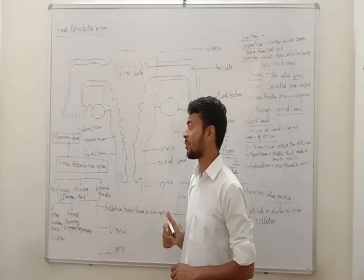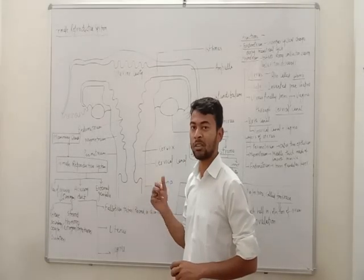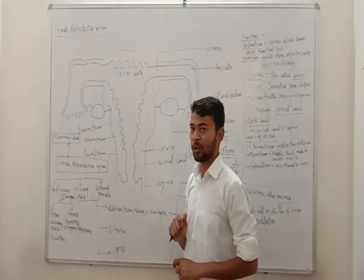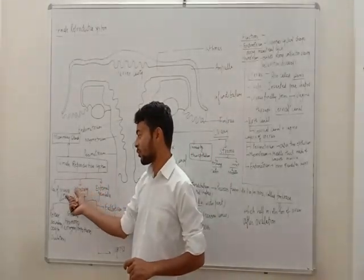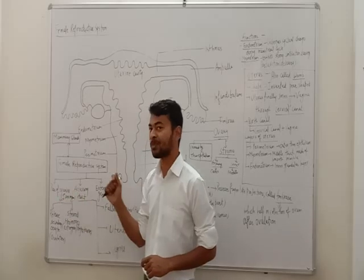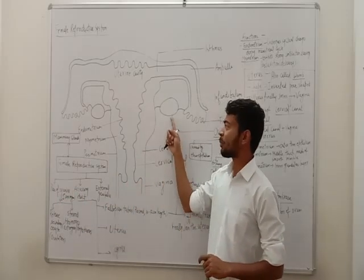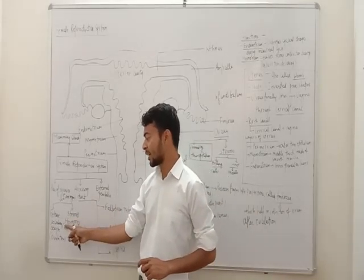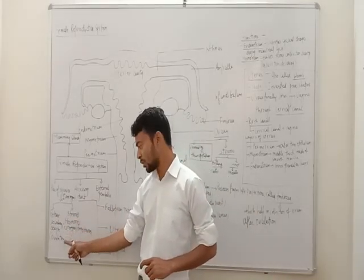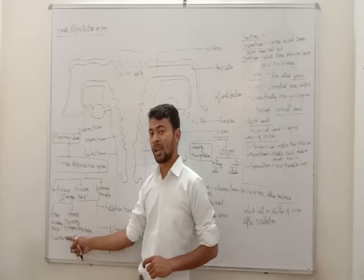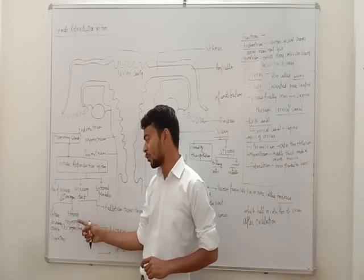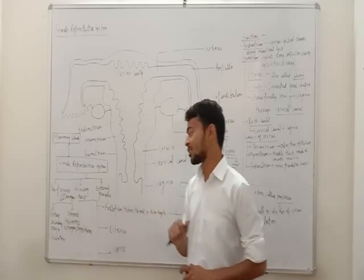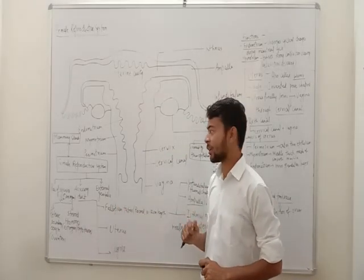Now we are discussing about the ovaries. The ovaries are primary sex organs that produce and release secondary oocyte through the process of ovulation. They also produce steroid hormones, which are primarily estrogen and progesterone. These are the steroid hormones produced by the ovaries.